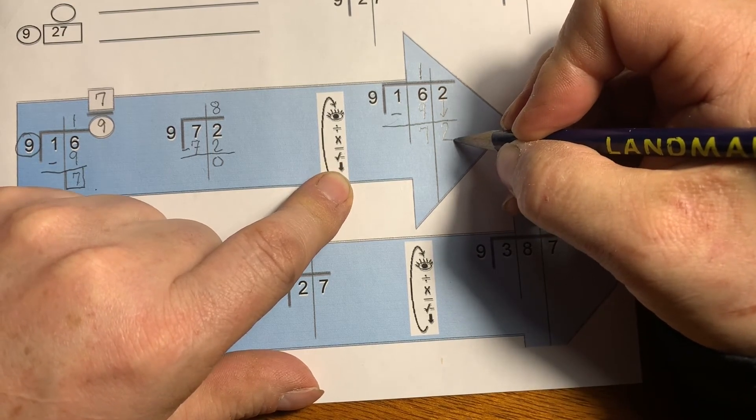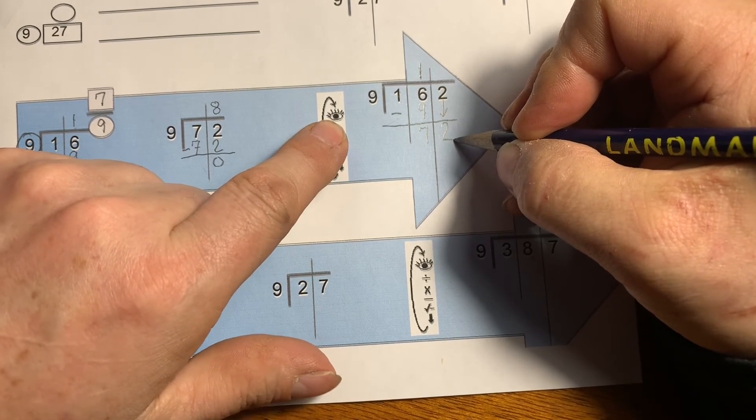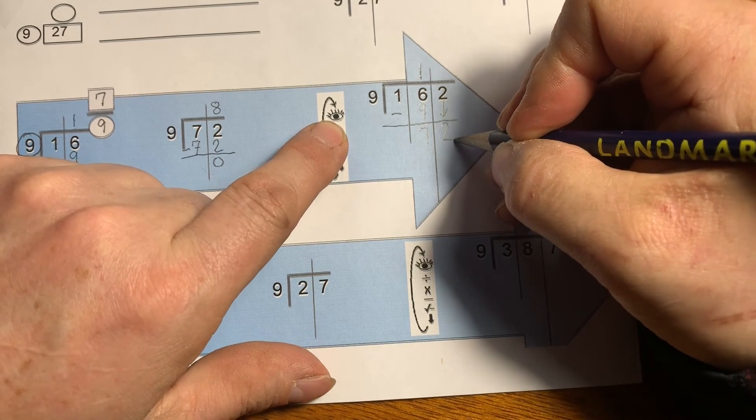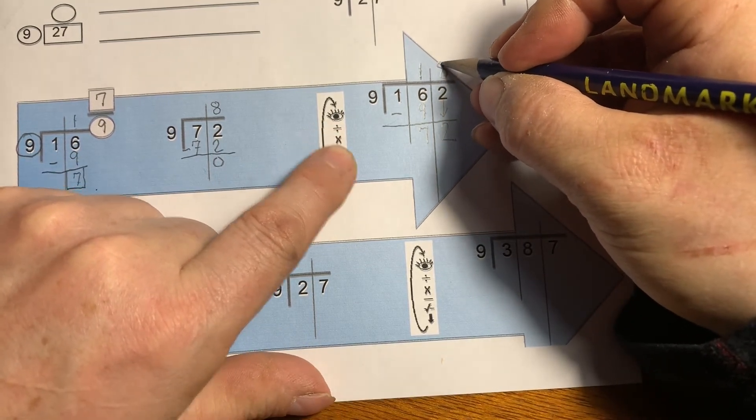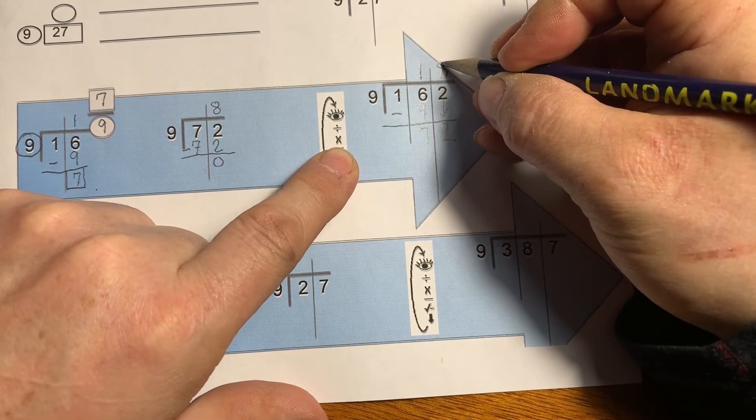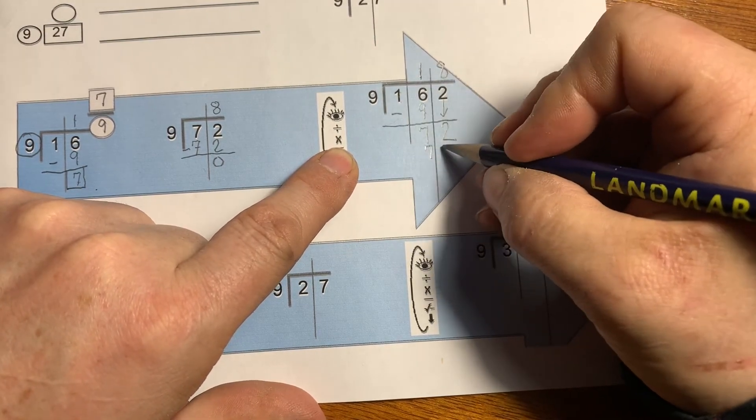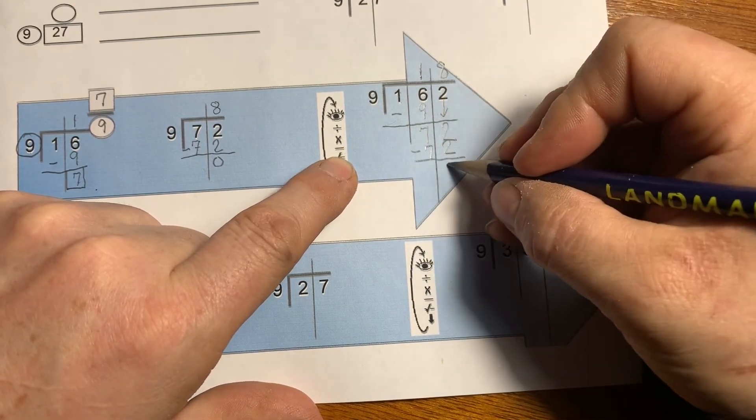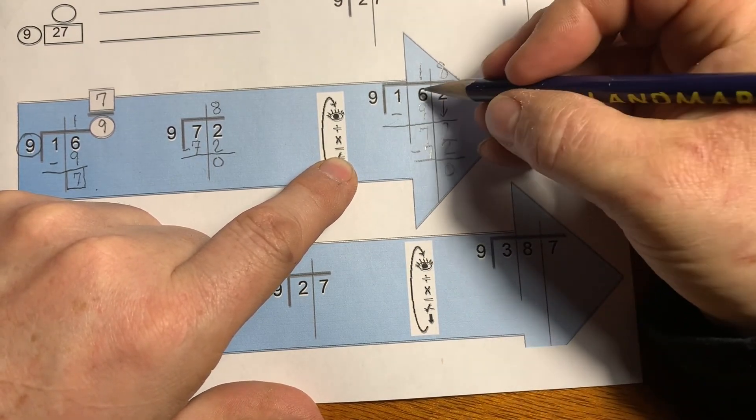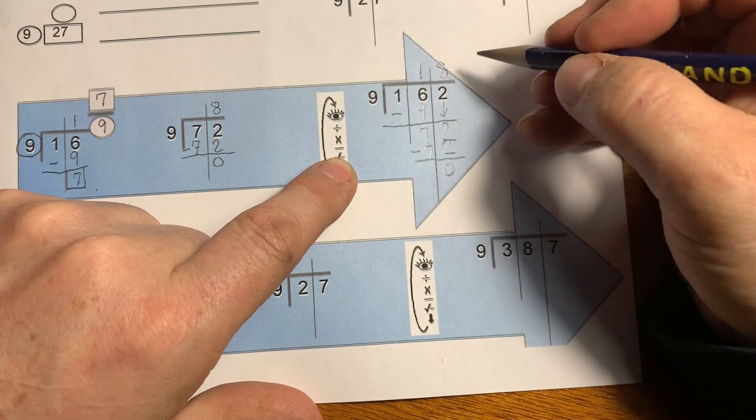How many 9s can I get out of 72? I can get 8 when I divide. Next step, multiply: 8 times 9 is 72. Subtract—there's nothing left. 162 divided by 9 is 18.